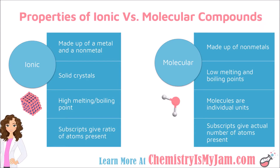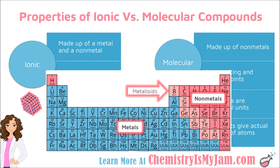Ionic compounds are made up of a metal and a nonmetal, whereas molecular compounds are typically made up of nonmetals. That is crucial information that helps us identify the type of compound. If you see a compound that contains a metal from the left-hand side of the periodic table and a nonmetal from the right, it is ionic. However, if it only contains nonmetals, it would be molecular. Recall that nonmetals are mostly found on the right-hand side of the periodic table, with the exception of hydrogen, which is on the left.